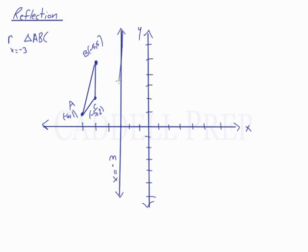And this here is the line x equals negative 3, because anywhere on this line, x equals negative 3. It doesn't matter what the y value is, x is always negative 3 on this line.